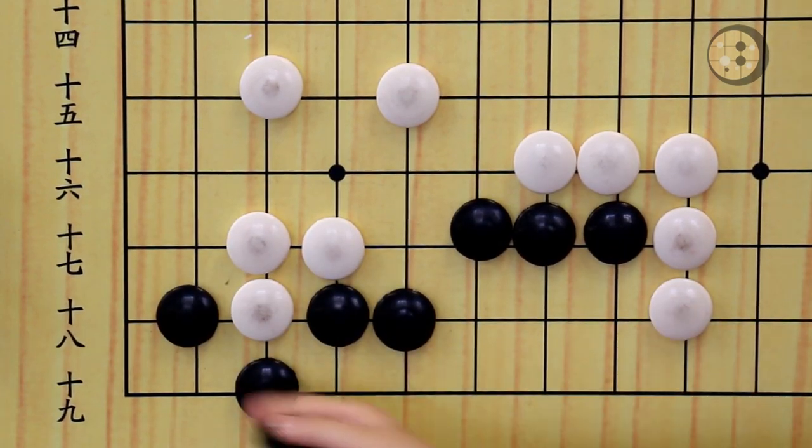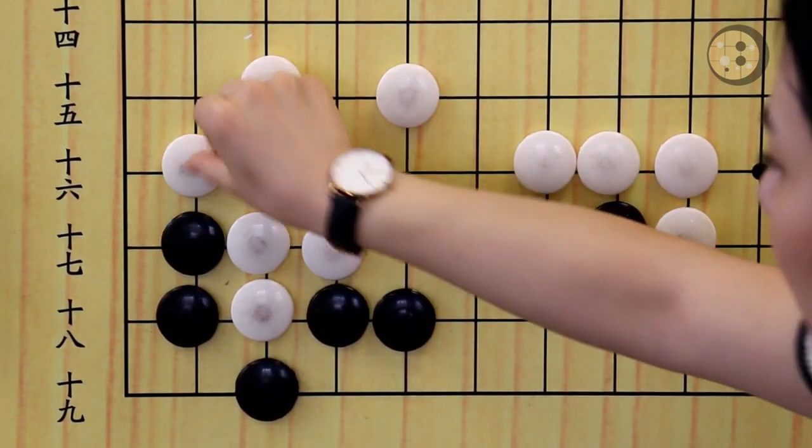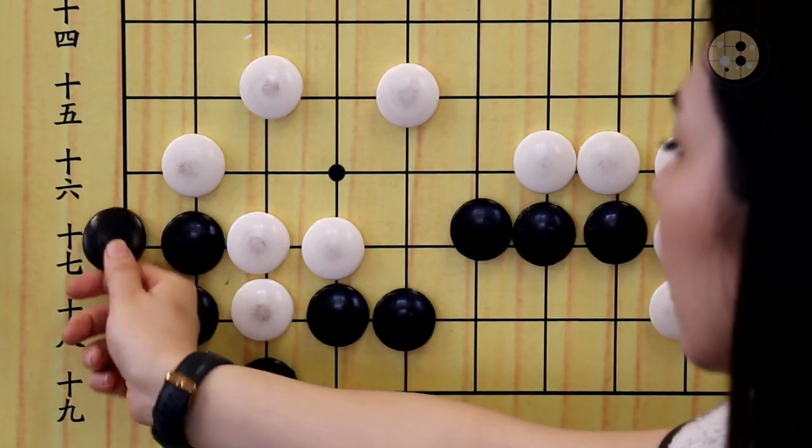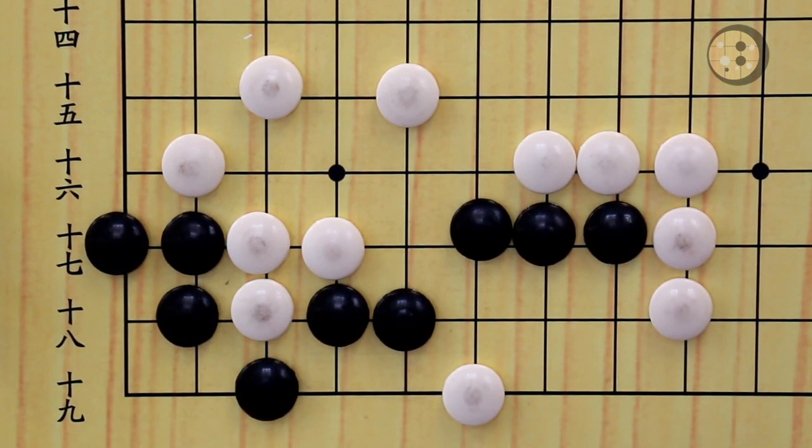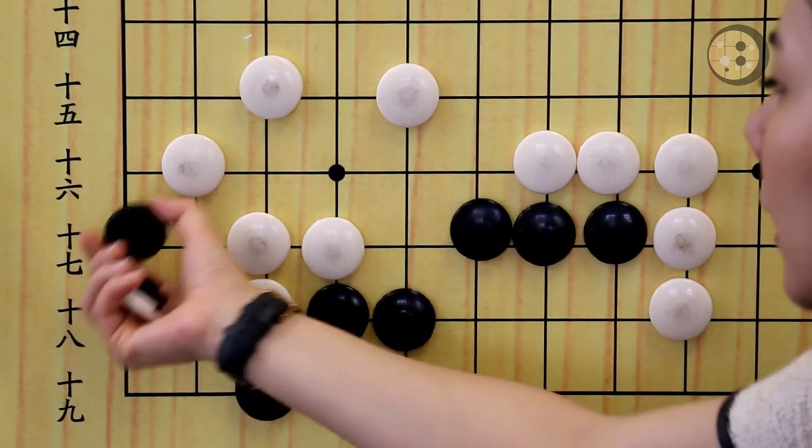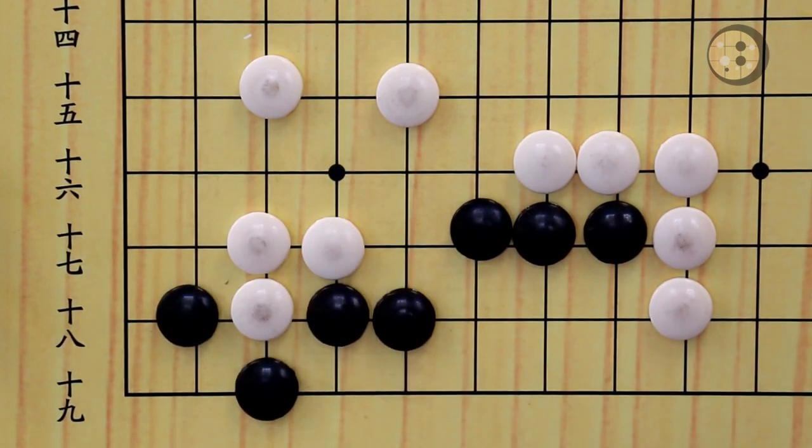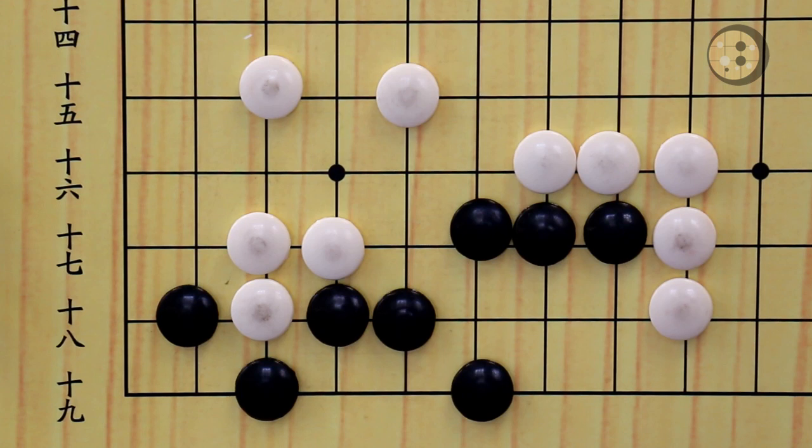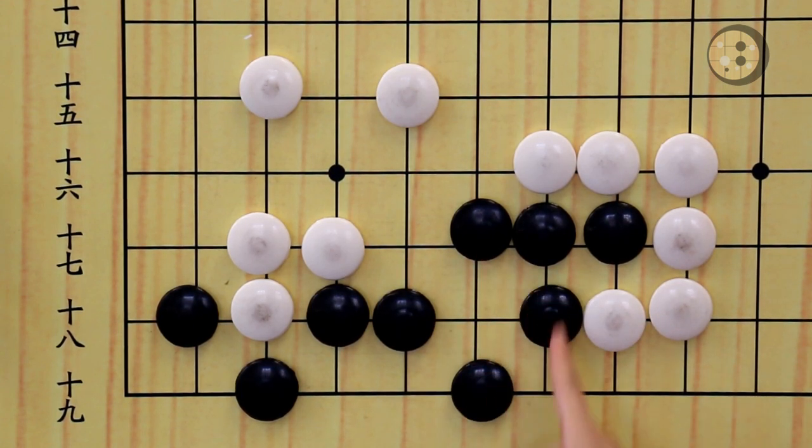You have another potential eye in the corner. But if you just simply make the eye in the corner, white is going to play the monkey jump and destroy all of your eye space on the side. So now you still have one eye. So that's not correct either. Like I said at the beginning, we have to find a tasuji to make two eyes at the same time. The tasuji is the tiger's mouth at the first line. Now you already secured the eye on the second line.